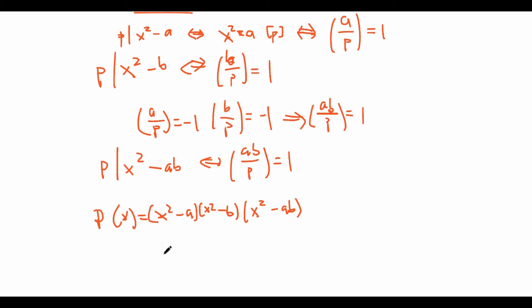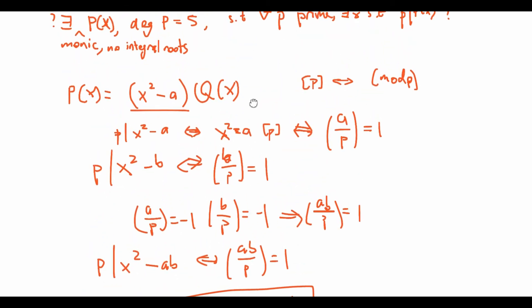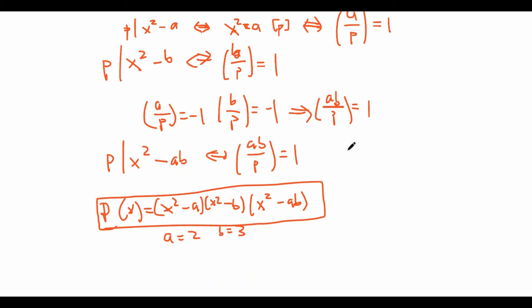This polynomial satisfies every single condition except one: the degree of p has to be 5, not 6. And in general, we won't be able to get any polynomial that works using this idea, because it requires at least 3 quadratic factors, which gives a degree of at least 6. So unfortunately this will not work.